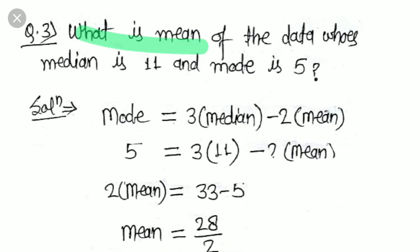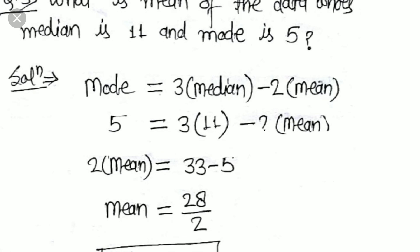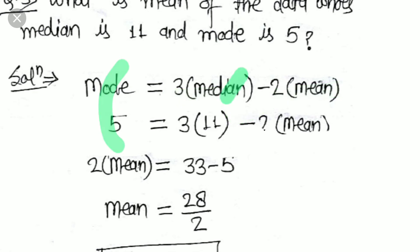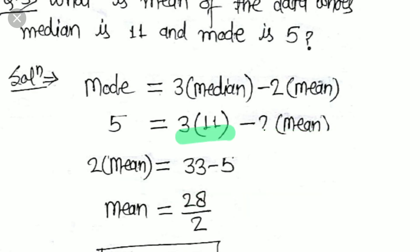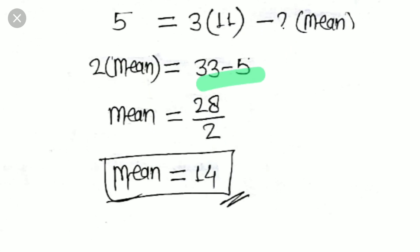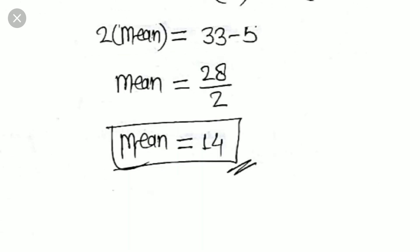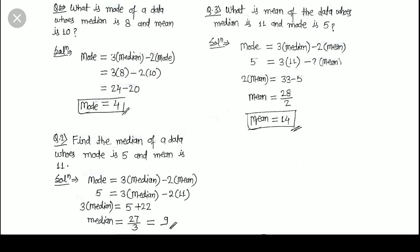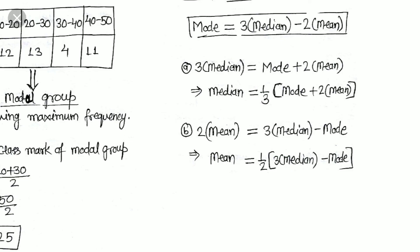Next question: what is the mean of the data whose median is 11 and mode is 5? Using Mode = 3 × Median − 2 × Mean: 5 = 3 × 11 − 2 × Mean, so 5 = 33 − 2 × Mean, which gives 2 × Mean = 33 − 5 = 28, so Mean = 28 / 2 = 14.